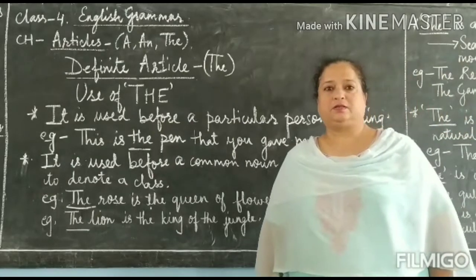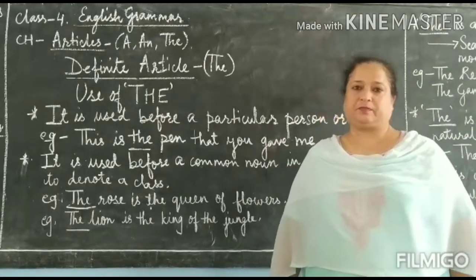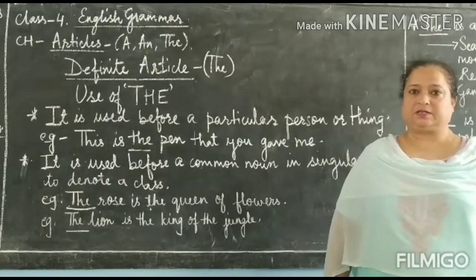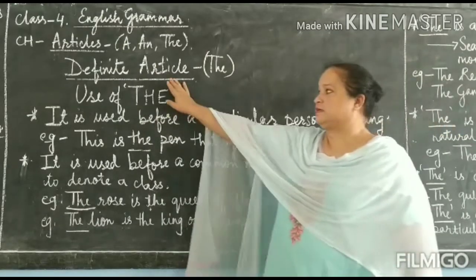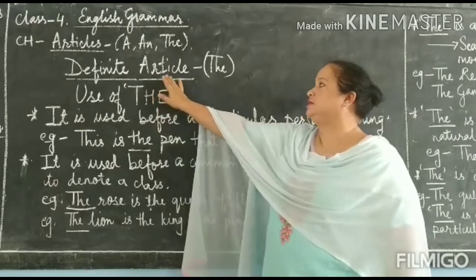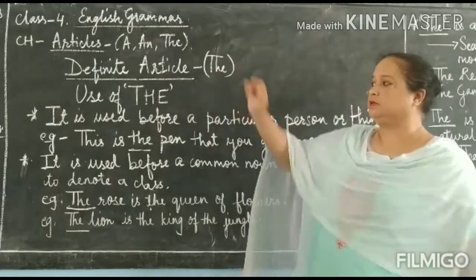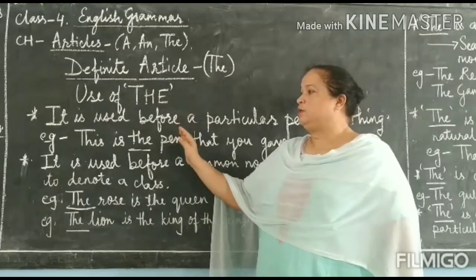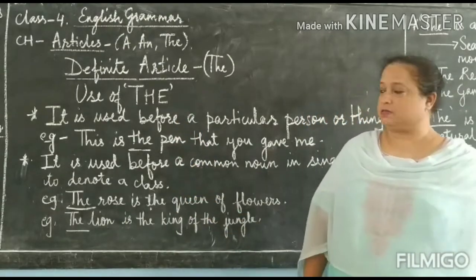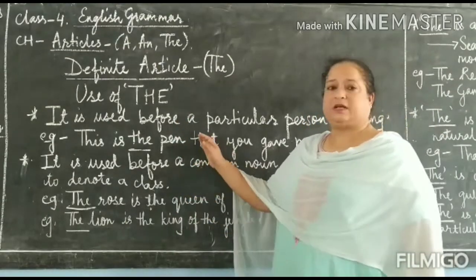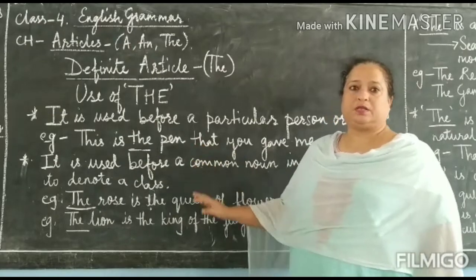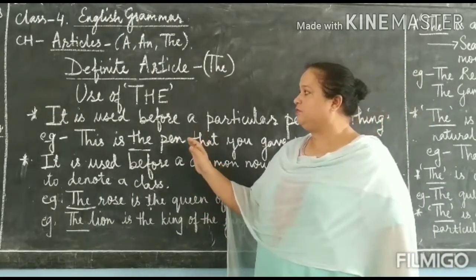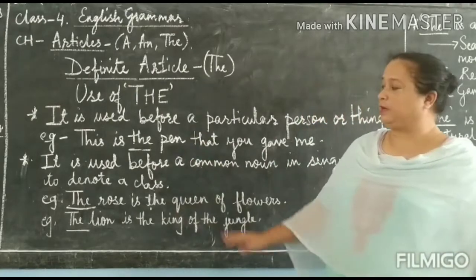Welcome again to another class of English grammar for Class 4. Today we are going to continue with the article chapter and we will be discussing the definite article, that is 'the' and its use. Now let us have a look at how we are going to use 'the' in our sentences. I have written some examples along with each use, so let's pay attention to the use of 'the'.